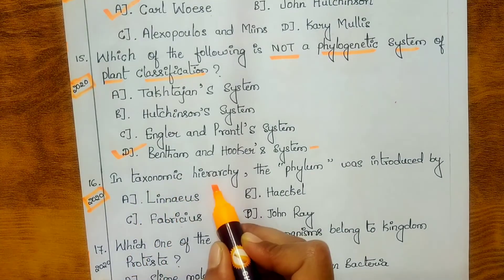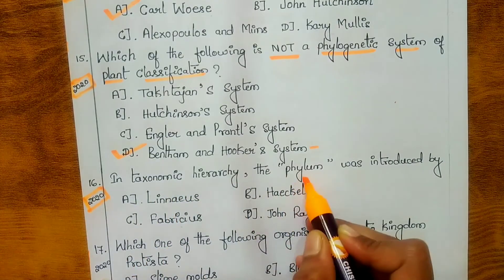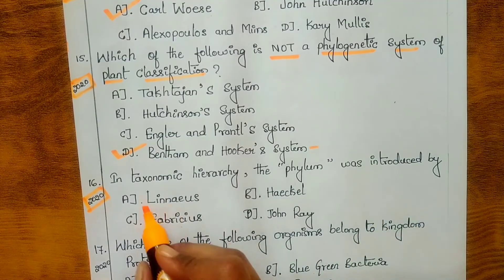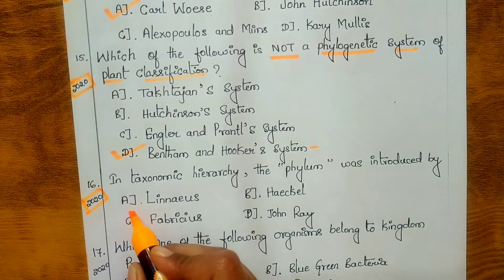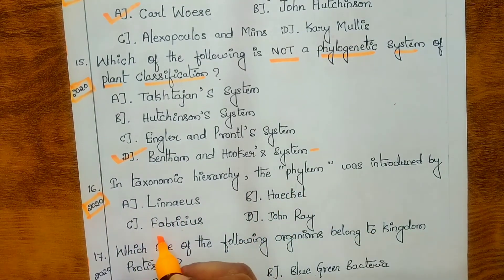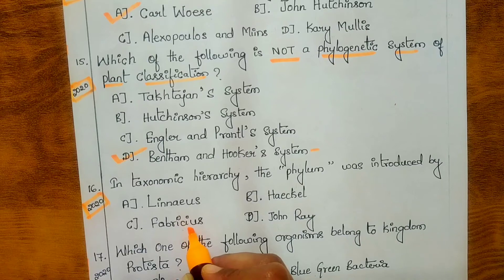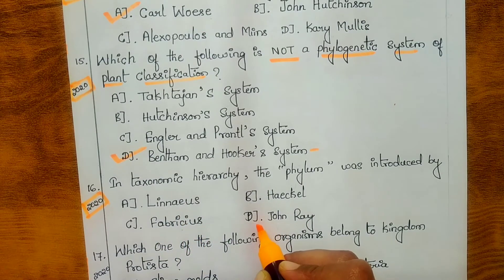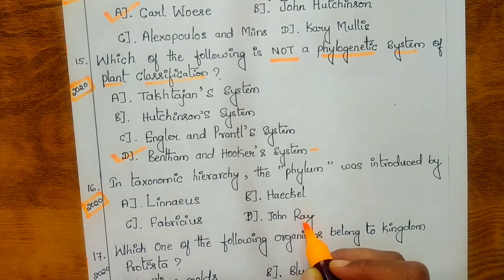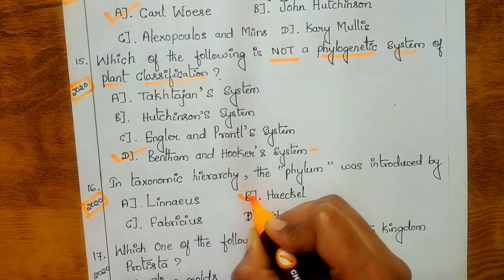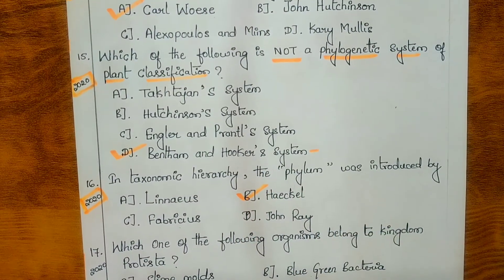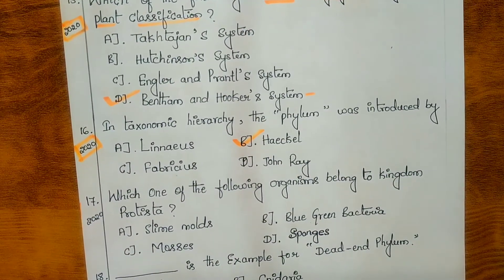Sixteenth question, from 2020: in taxonomic hierarchy, the term 'phylum' was introduced by whom? Options are: A. Linnaeus, B. Heckel, C. Fabricius, D. John Ray. The answer is Heckel.